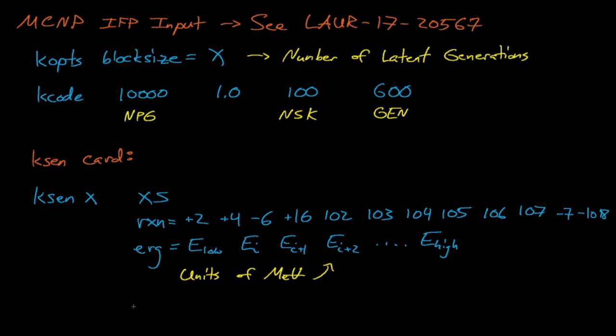While Tsunami automatically estimates sensitivity coefficients for every single isotope, reaction, and material in the problem, MCMP's K-SEN card allows the user to specify for which reactions to tally eigenvalue sensitivity coefficients. The XS card denotes that we want to tally the sensitivity of eigenvalue estimates to different reaction rates, and the RXN equals and ERG equals cards allow us to specify for which reactions we want sensitivity coefficients and what energy groups we use for our sensitivity tallies. In the next lecture, we'll discuss how we can do magical things by combining our sensitivity coefficients with cross-section covariance data, and we'll need to make sure that our sensitivities use the same energy group structure as our covariance data and that they're estimated for every single isotope and reaction in our system. The PRDMP-J card prevents MCMP from overloading our outputs with extra information, and that's all we need for MCMP to estimate eigenvalue sensitivity coefficients.